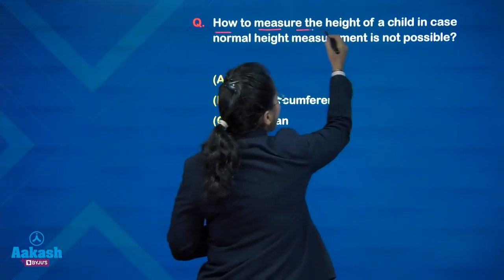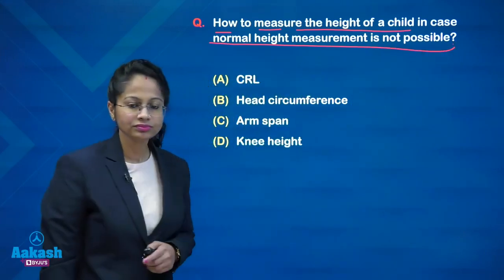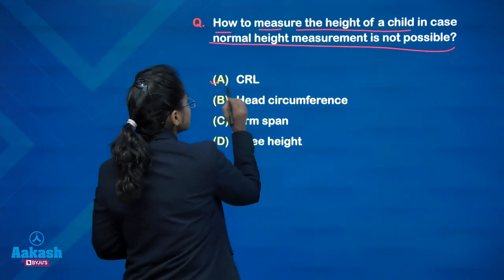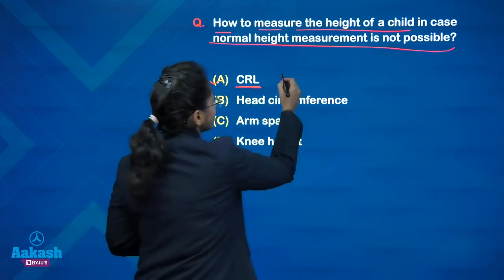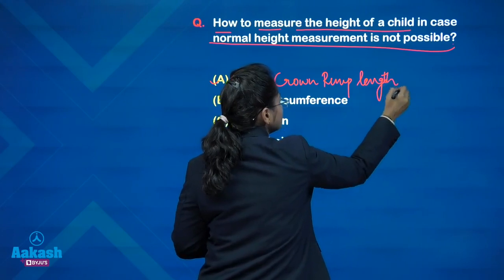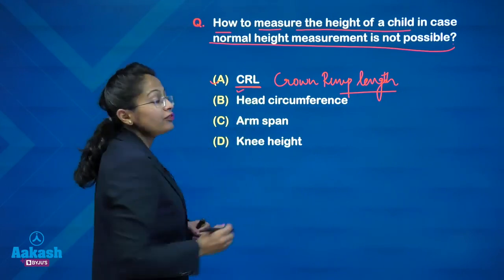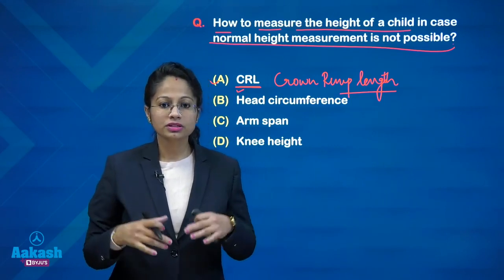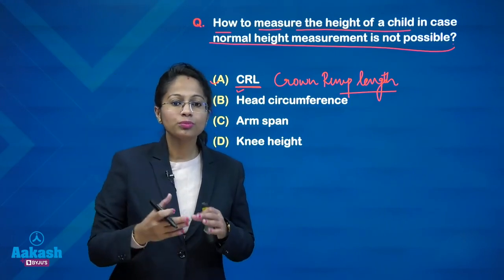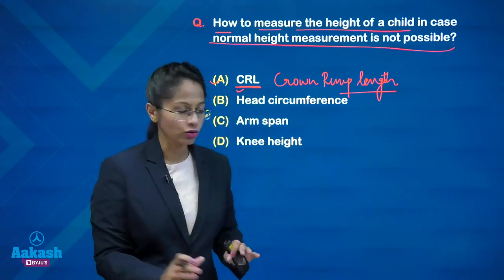How do you measure the height of a child when normal height measurement is not possible? This is a somewhat tricky question. The first option is CRL — crown rump length — which is the length of the fetus from the crown to the bottom of the buttocks, used in antenatal ultrasounds. This cannot be used for height measurement in a child, so this option is wrong.